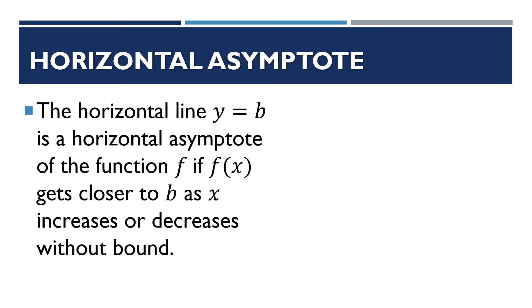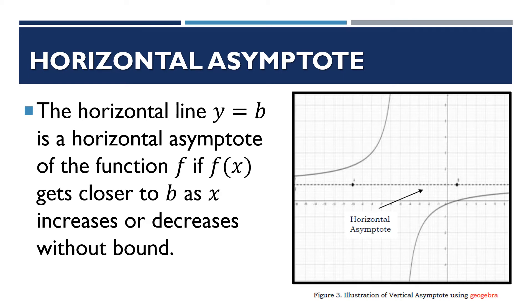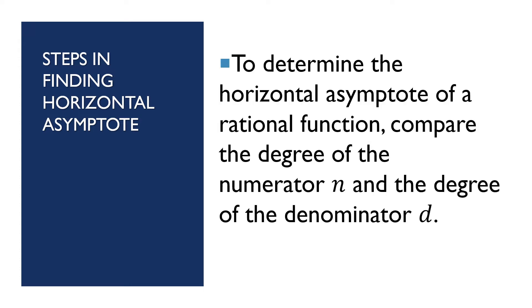For the horizontal asymptote, the horizontal line y = b is a horizontal asymptote of the function f if f(x) gets closer to b as x increases or decreases without bound. In this graph, the red line is the horizontal asymptote and it is y = 1. The steps in finding the horizontal asymptote: we compare the degree of the numerator n and the degree of the denominator d — meaning we compare the highest exponent of the numerator and denominator.